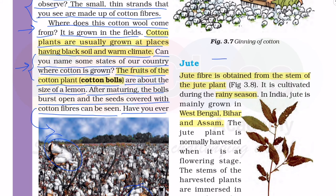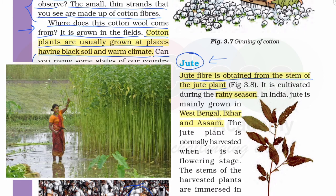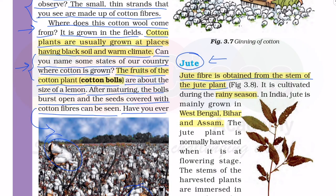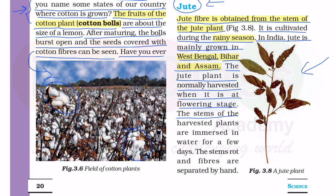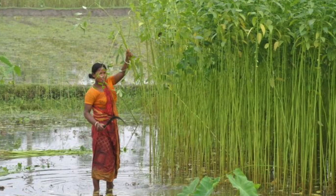Now we will talk about another fiber - jute. Jute fiber is obtained from the stem of the jute plant - उसकी डाली में से निकलता है jute। It is cultivated during the rainy season in India. Jute is mainly grown in West Bengal, Bihar and Assam. The jute plant is normally harvested when it is at the flowering stage. The stems of the harvested plants are immersed in water for a few days, and then the stems rot and fibers are separated by hand.